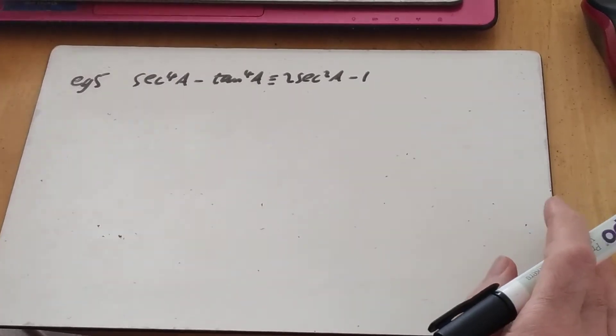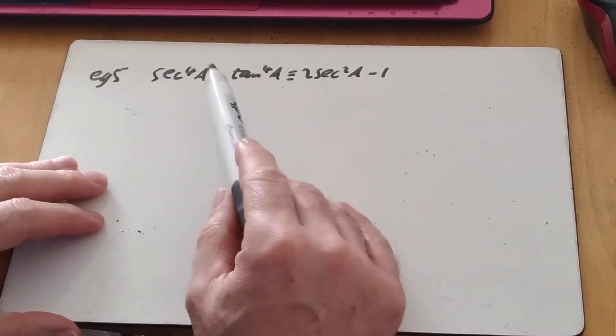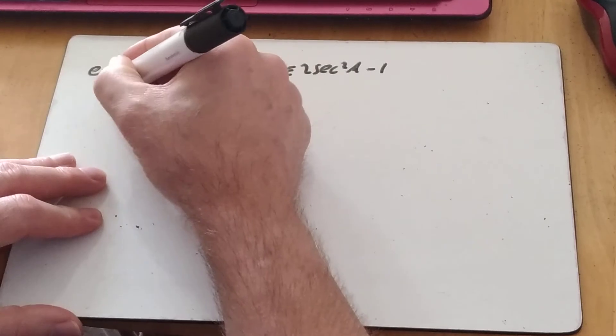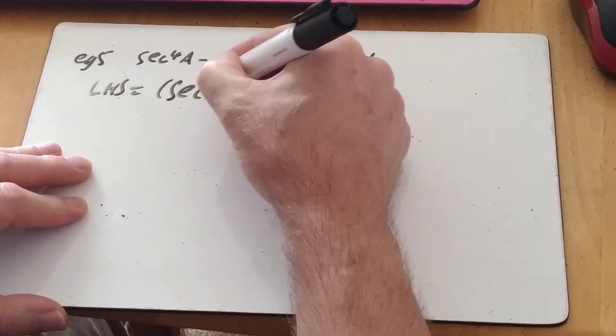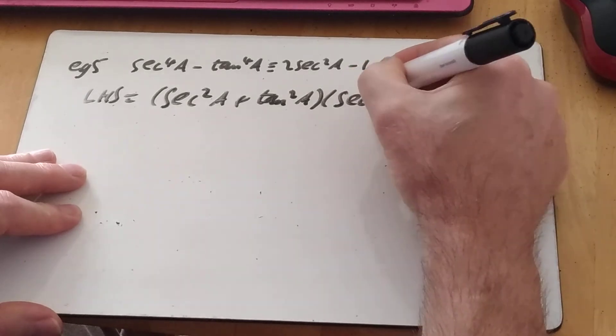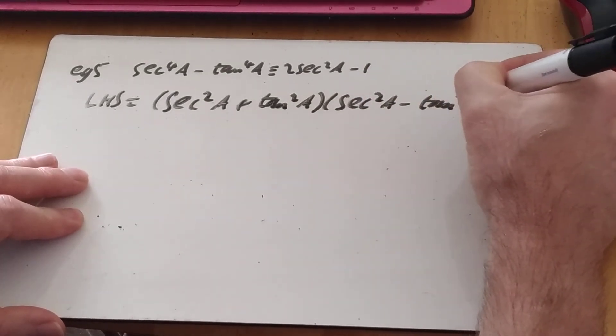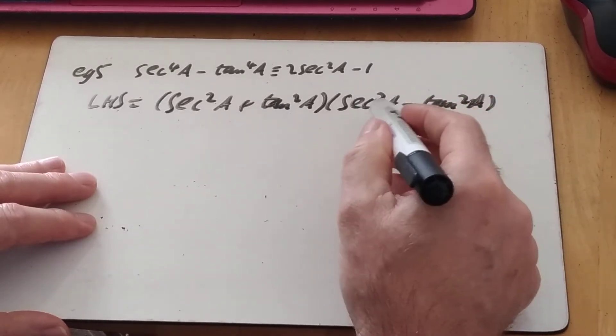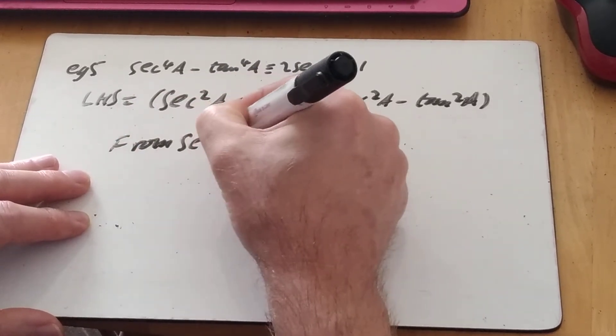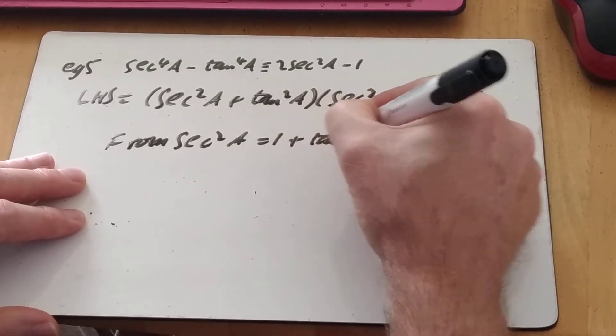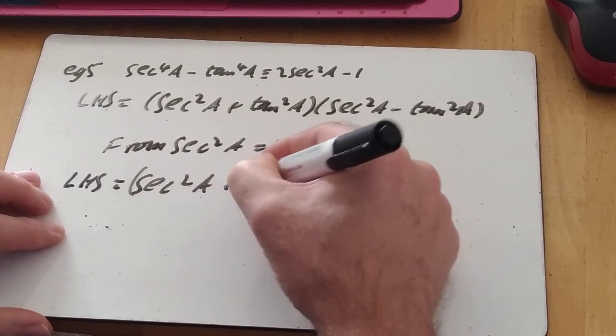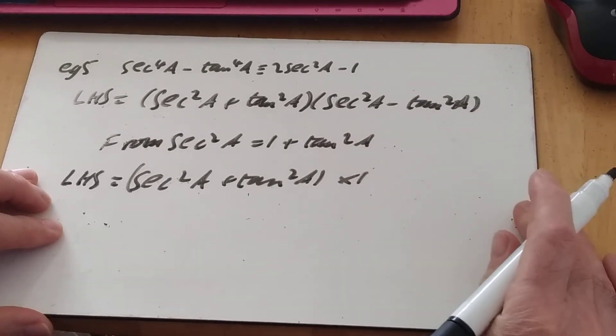Last example from this. Yeah, not obvious in some ways, but the fact we've got even powers and a minus, I'm looking at a difference of two squares. I can write the left-hand side then as the sum, sec squared plus tan squared times sec squared a minus tan squared a. Hopefully one of those. Well, I know that sec squared equals 1 plus tan squared. So I can say that the left-hand side then is bracket sec squared a plus tan squared times 1. And I'm nearly there.